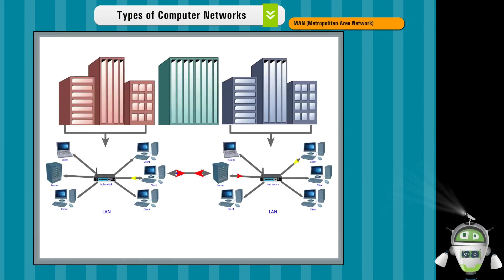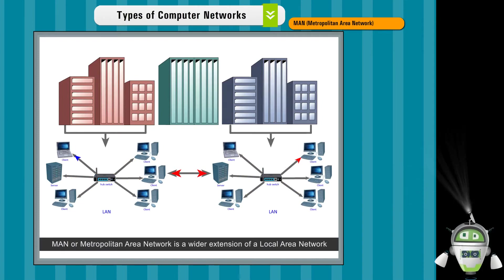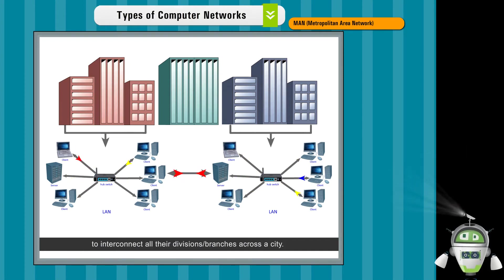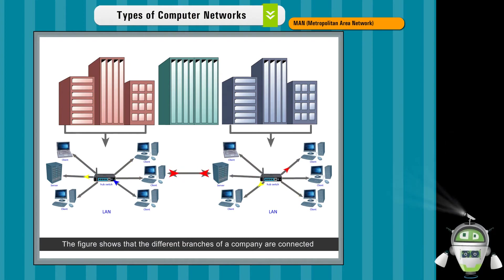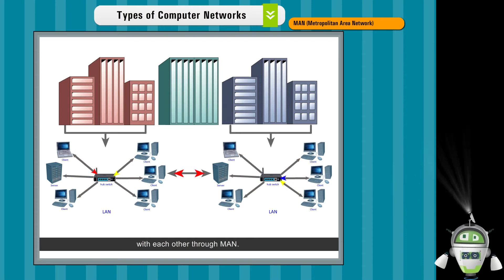MAN – Metropolitan Area Network. MAN or Metropolitan Area Network is a wider extension of a local area network that can connect computers in a big city. MANs are mainly used by large companies to interconnect all their divisions or branches across a city. The figure shows that the different branches of a company — central office, branch offices, and factory — are connected with each other through MAN.